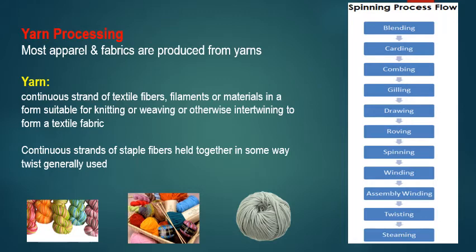Now about yarn processing — how to make the yarn. Most apparel and fabrics are produced from yarns. Yarn is a continuous strand of textile fibers, filaments, or materials in a form suitable for knitting, weaving, or otherwise interweaving to form a textile fabric. Yarn is a kind of thread obtained from a mixture of fibers by a process of spinning, giving it strength. Yarn is a continuous strand of staple fibers held together by twisting, generally done through spinning.